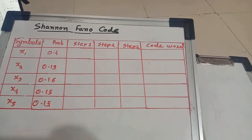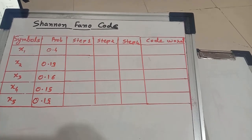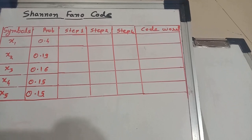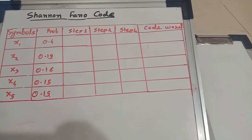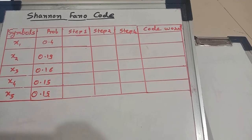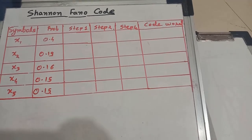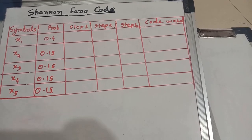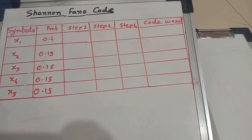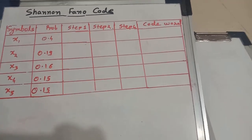I am Dr. Sariqa Panwal. Today we will discuss Shannon-Fano code, which is also a variable length code in information theory. We have already discussed the Huffman code, which is a variable length code having prefix coding. Shannon-Fano code is also a variable length coding technique and it is also a prefix code. While solving the problem of Shannon-Fano, we have to follow some predefined steps — that is, one fixed algorithm.